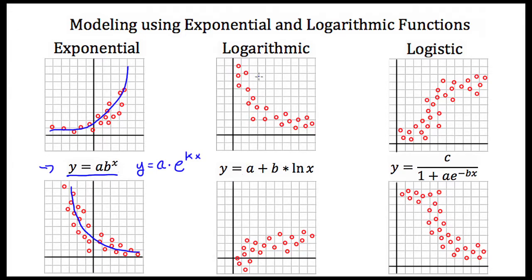Now let's look at an example of a logarithmic scatterplot. Here is my data, and if I drew a trend line that looks something like this, I might think that this is a logarithmic model. Here is my equation for a logarithmic model, and my regression software would tell me the values of a and b.